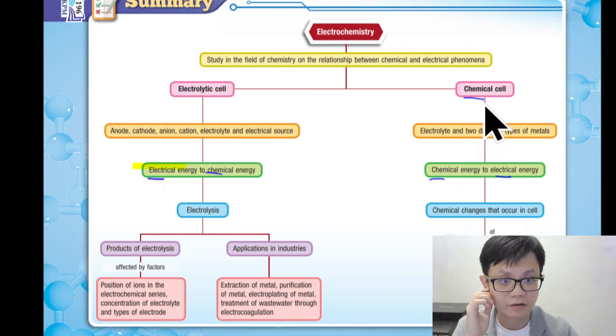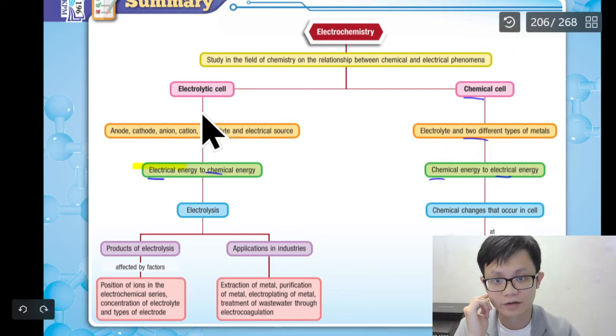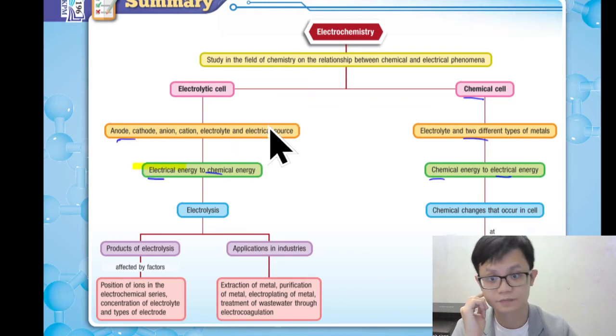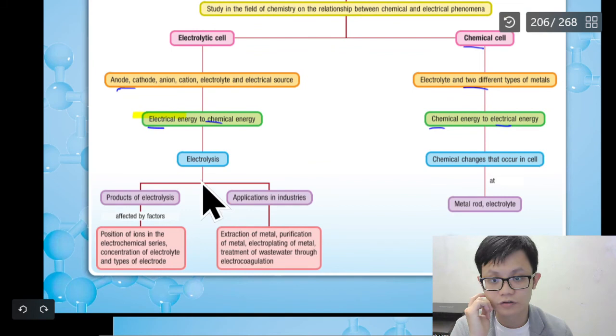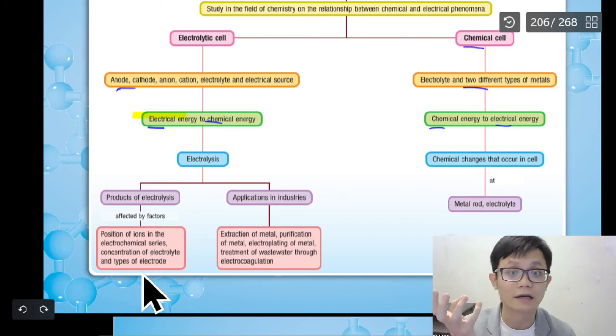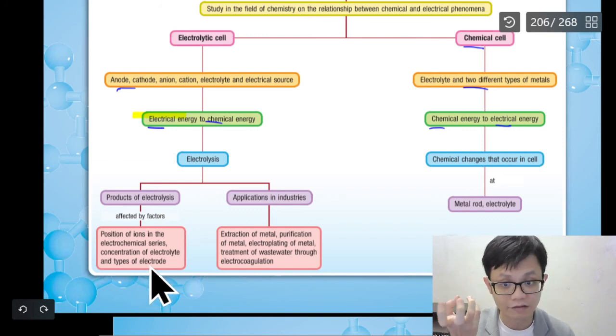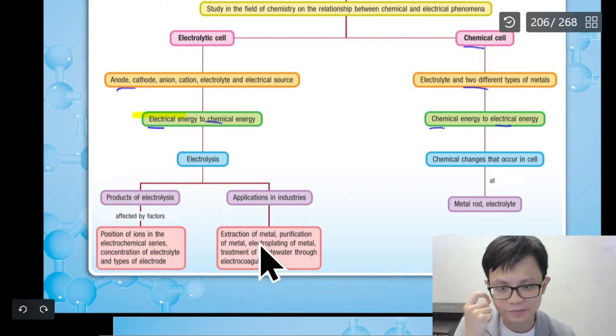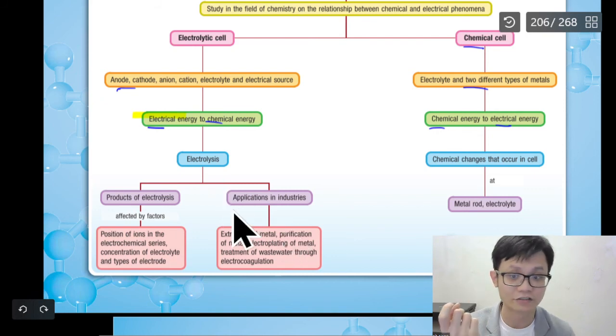Again, chemical cell you need to use two different types of metal. And cathode ion will be the electric source. So the electrolysis, product of electrolysis, for example. This one I just skipped. No need to explain. Not important. Application of industry, you need to know. Why you want to use electrolyte.